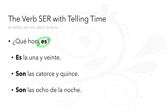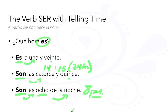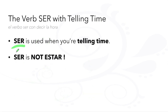¿Qué hora es? Es la una y veinte — es la una for the one o'clock hour. Son las catorce y quince — 14 hours and 15 minutes, using the 24-hour clock. Son las ocho de la noche — eight o'clock at night.